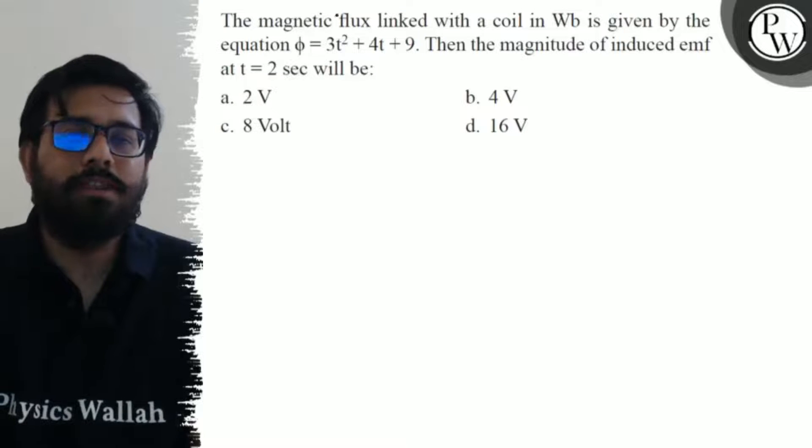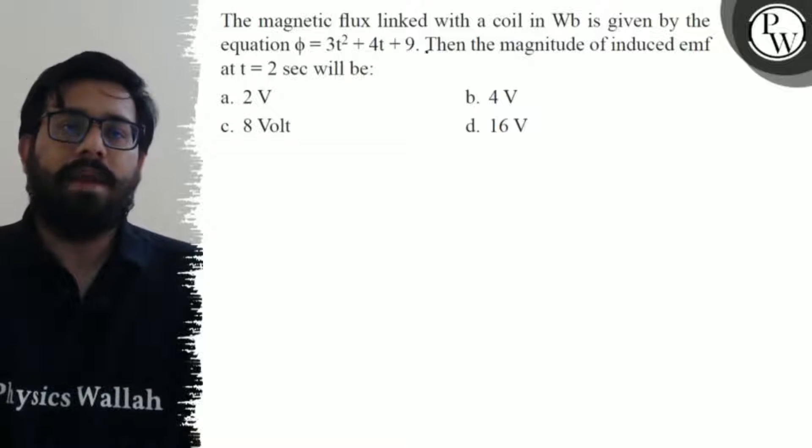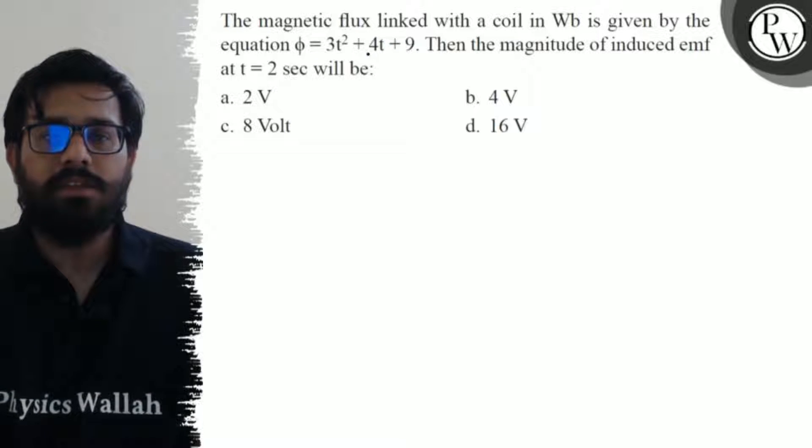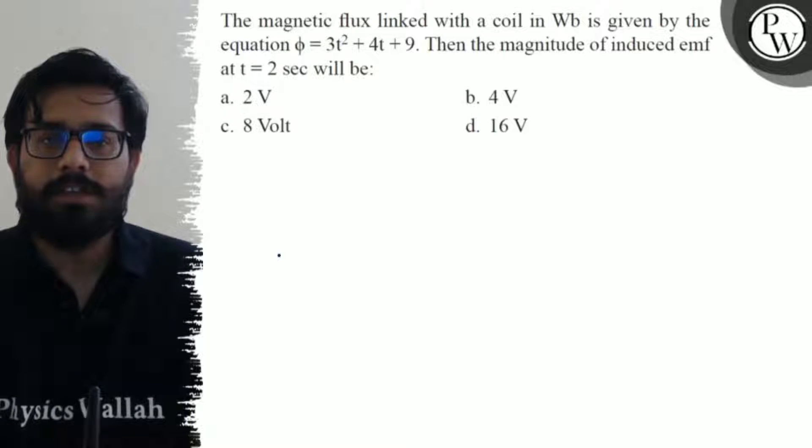Let's see the question. The magnetic flux linked with a coil in Weber is given by the equation φ = 3t² + 4t + 9. Then the magnitude of induced emf at t = 2 seconds will be: first option is 2 volt, second option is 4 volt, third option is 8 volt.